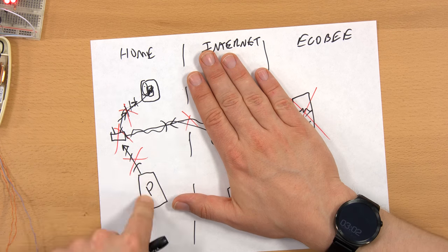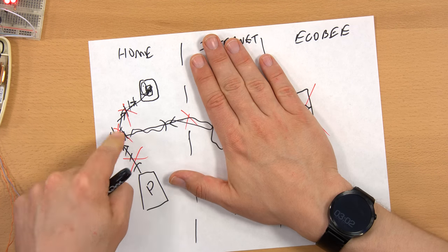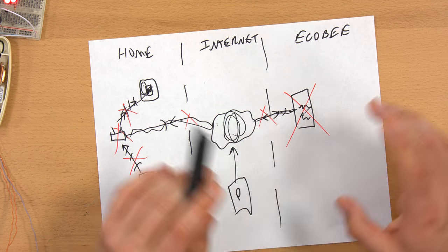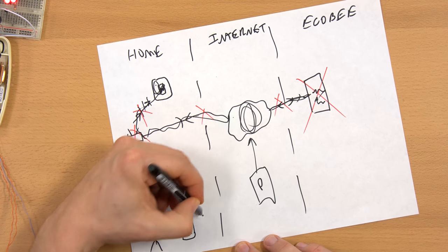If your internet was down, you could still sit on your couch and control it. But as it stands right now, you can't. In fact, it gets even more complicated.